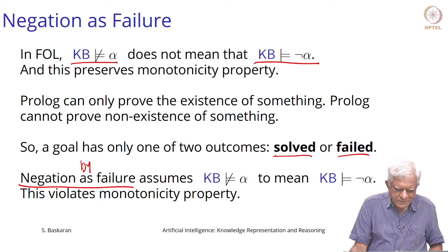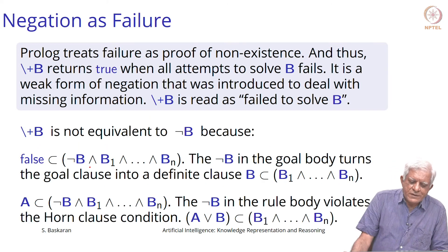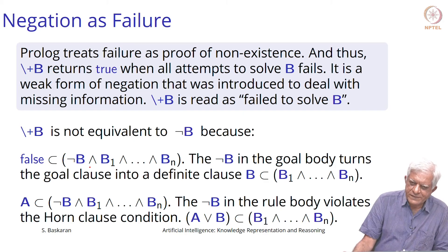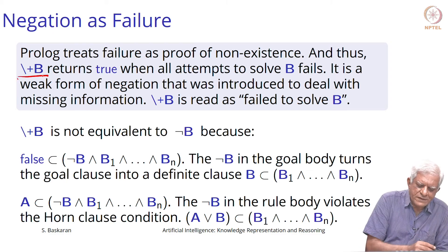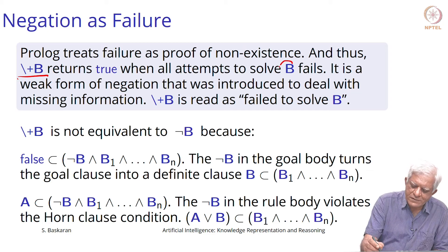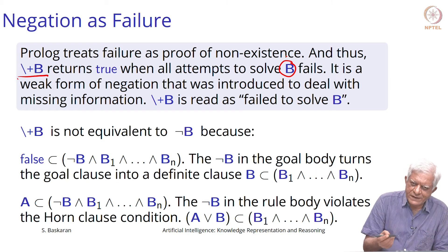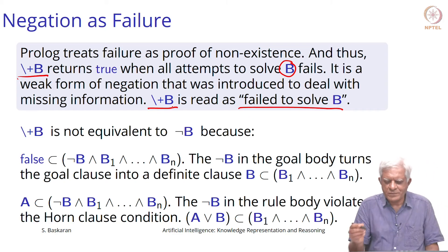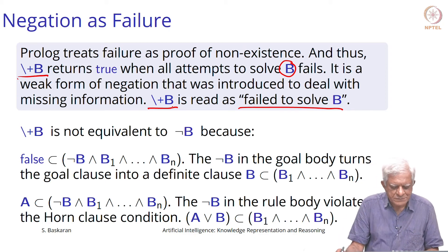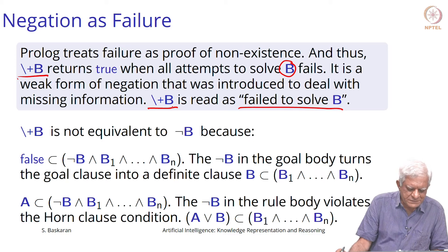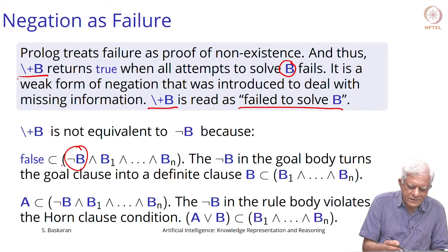Negation by failure assumes that if you cannot show alpha, then alpha is false — that not-alpha is true. But it is not a logical not; it is negation by failure, which logically does not make sense. Prolog treats failure as proof of non-existence: if you cannot show something is true, it must not be true. A negated goal B returns true when all attempts to solve B fail. To show not-B is true, you try to show B is true, and if all attempts fail then negation of B is true. It is a weak form of negation introduced to deal with missing information — read it as 'failed to solve B.'